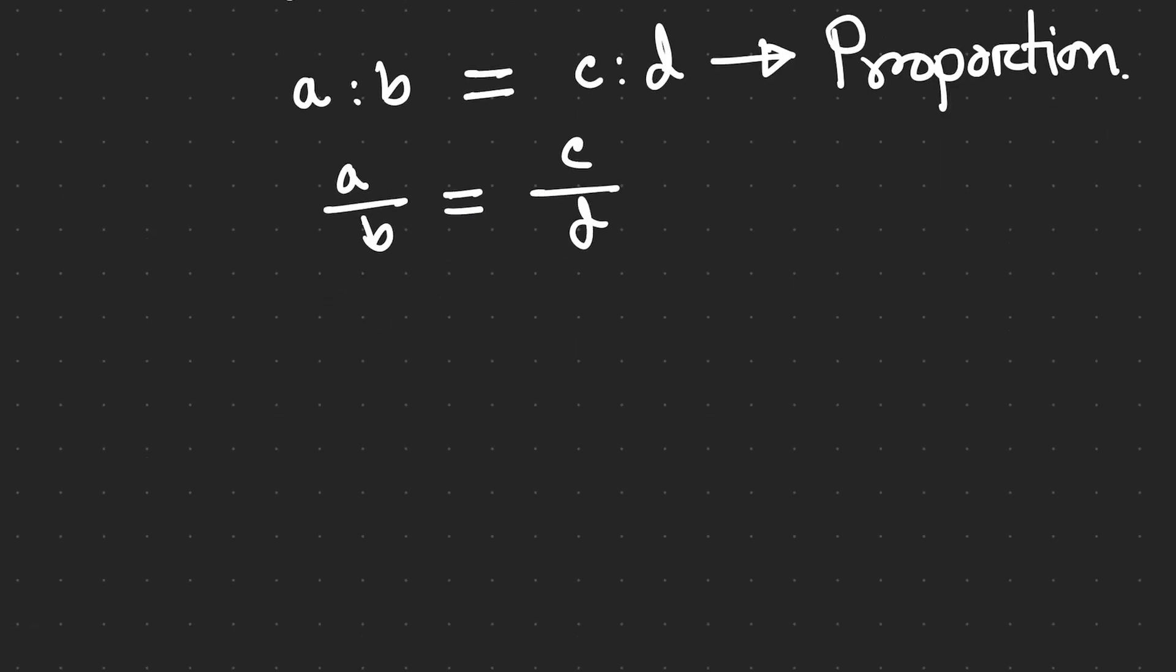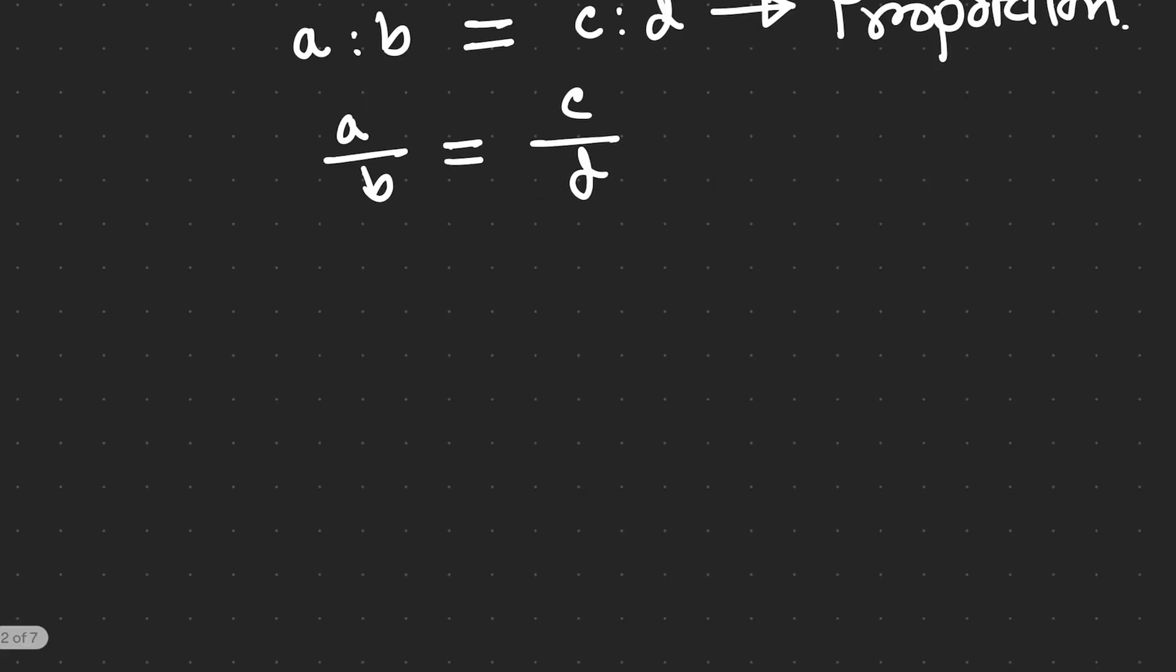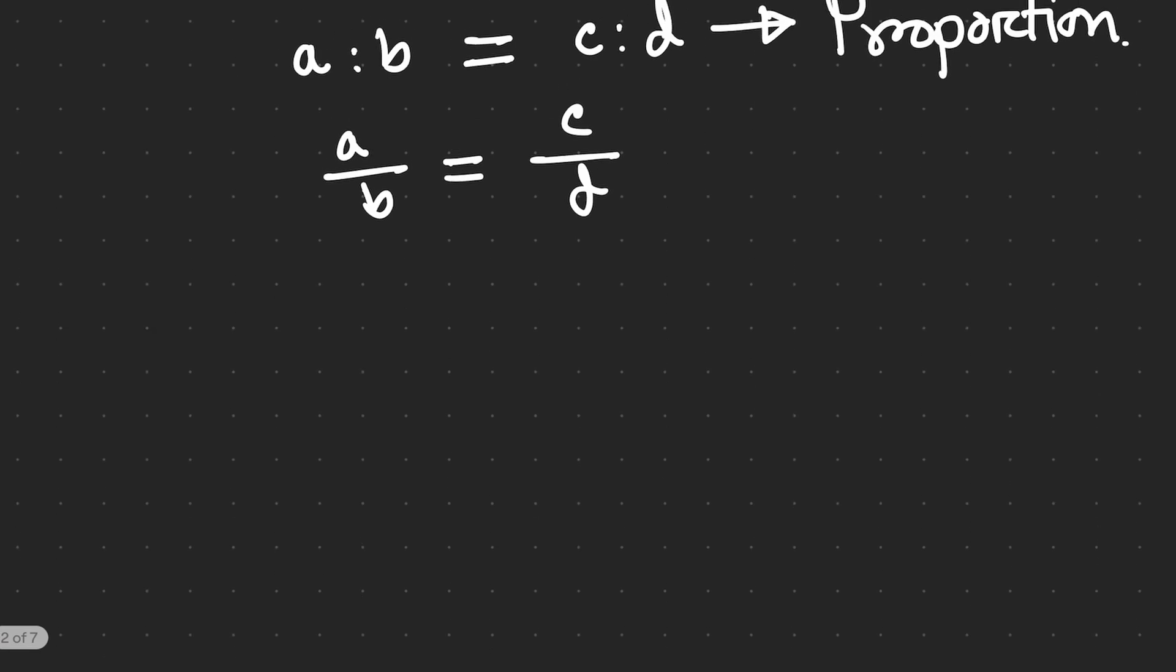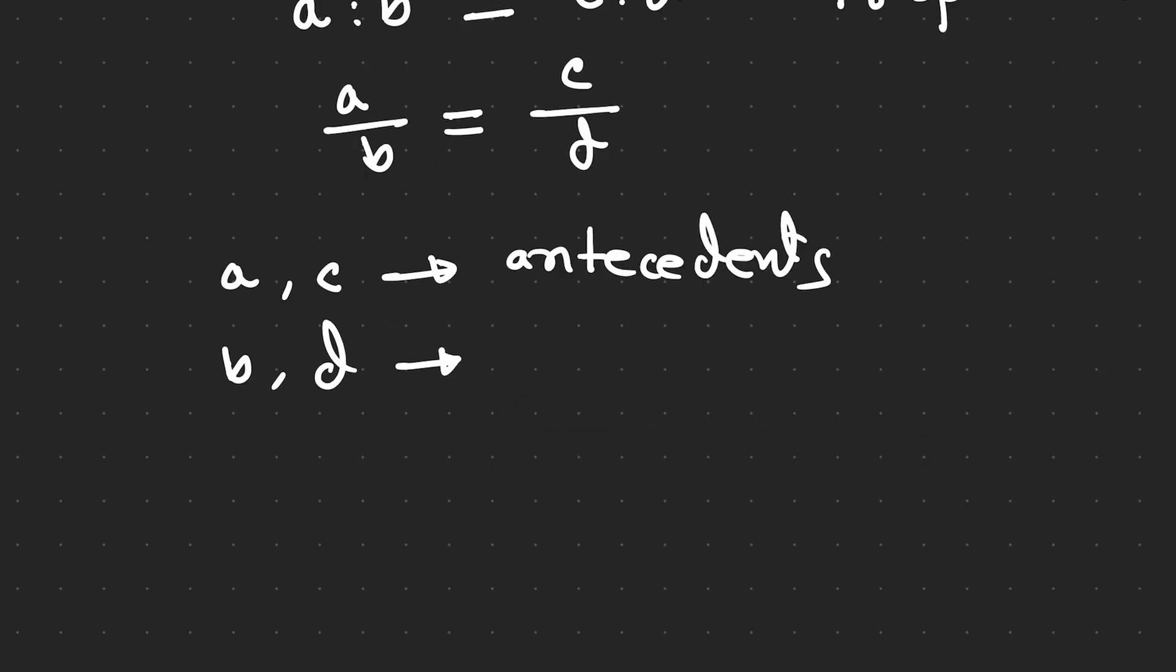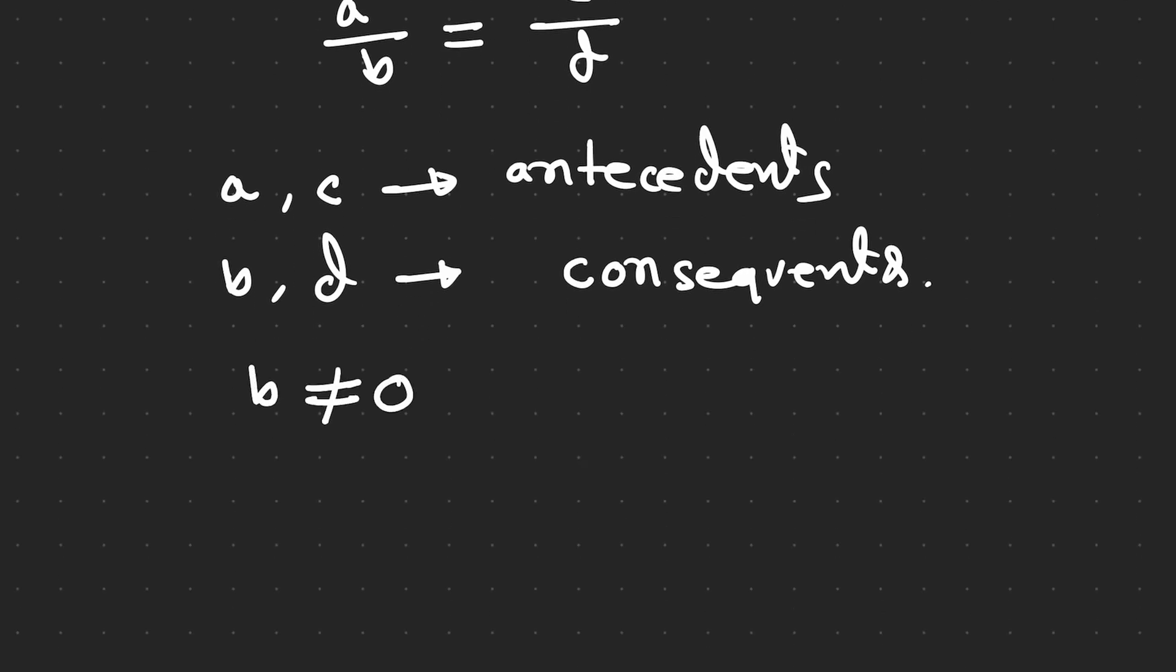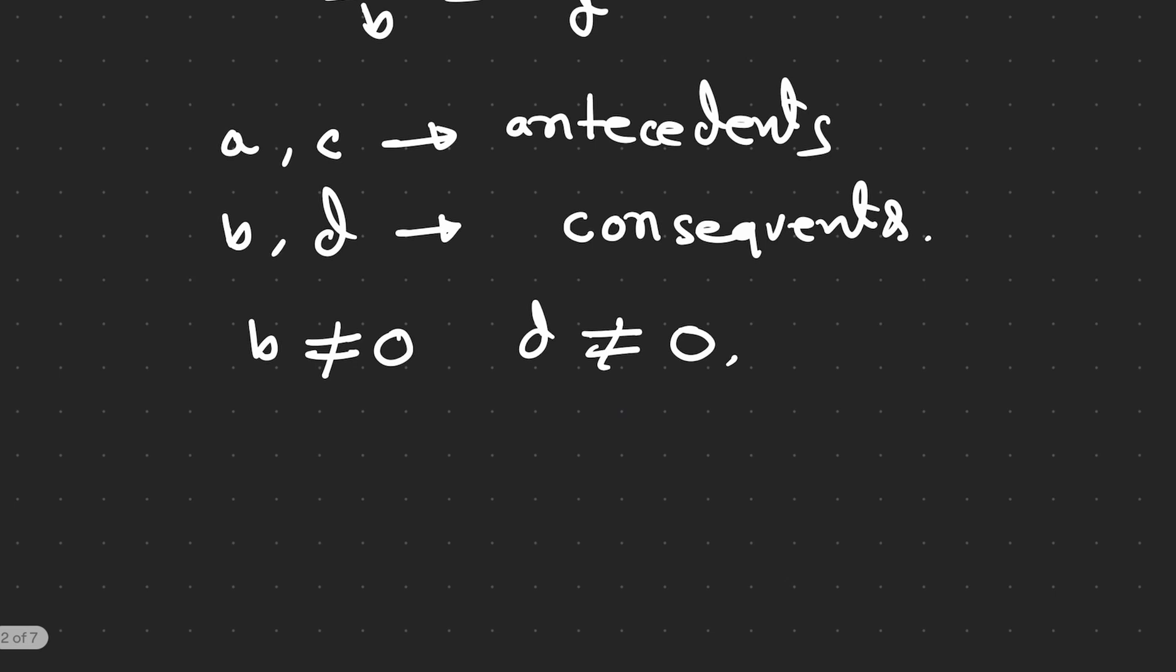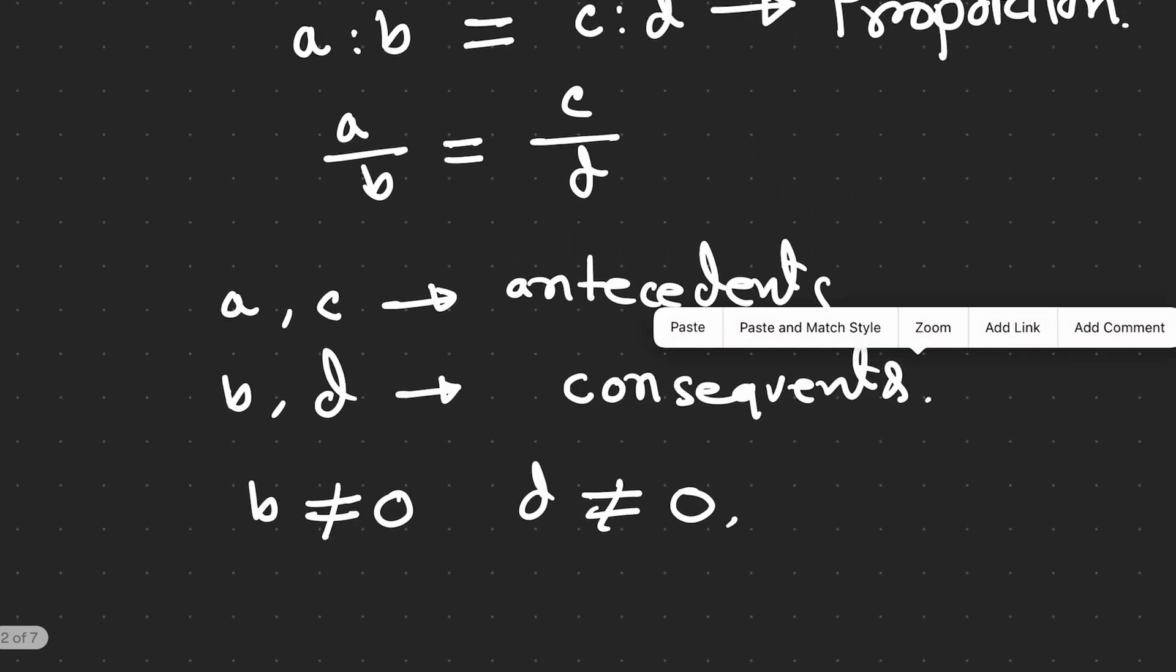The components of proportions: a and c are antecedents. Remember, a and c are called antecedents, and b and d are called consequents. Remember, b and d cannot be zero. The extremes: a and d are also called extremes, and b and c are called means.